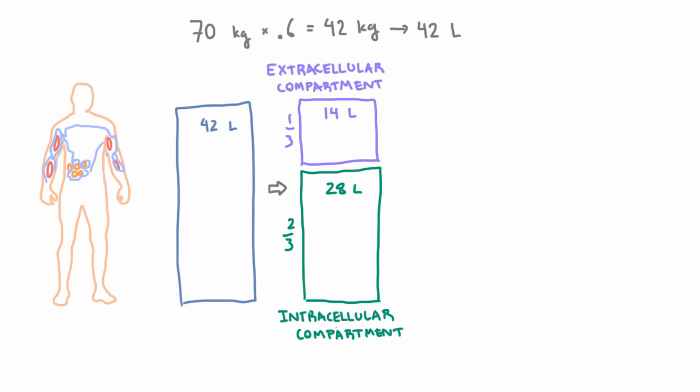We can divide all the fluid in the body into two parts: inside cells and outside cells. We can further divide the part outside cells into two different parts, and that is extracellular fluid inside blood vessels and extracellular fluid outside blood vessels.